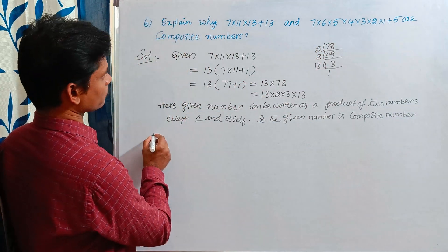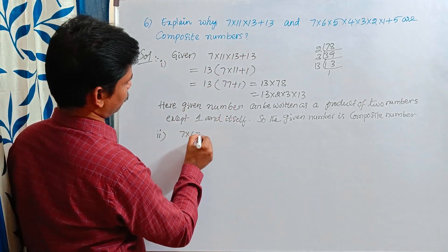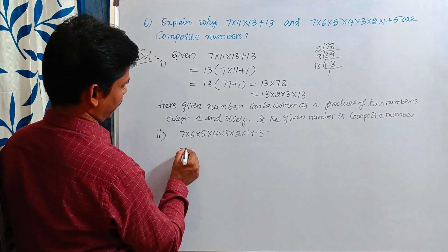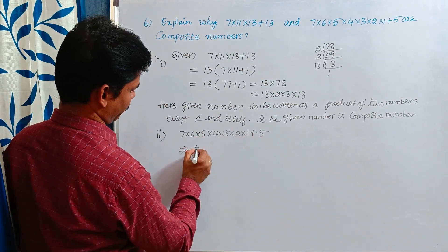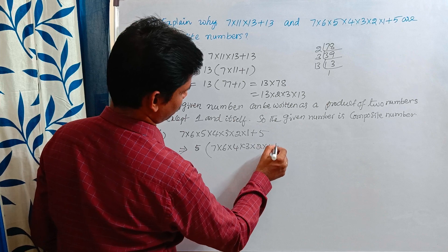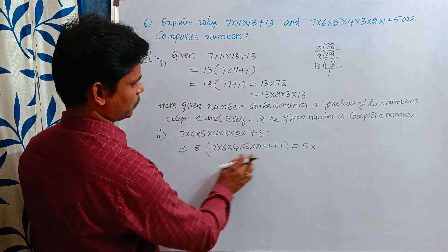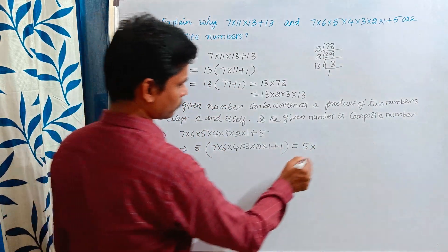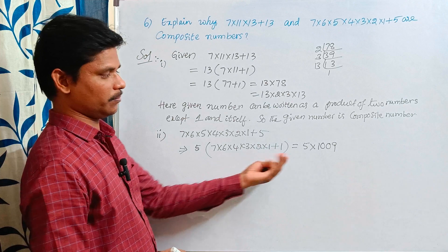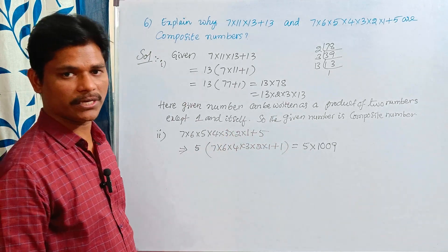See this second number: 7 × 6 × 5 × 4 × 3 × 2 × 1 + 5. Here take 5 as common: 5 × (7 × 6 × 4 × 3 × 2 × 1 + 1). Simplify: 5 × (1009). This number also — the given number is a product of two numbers except 1 and itself. So this one is also a composite number.